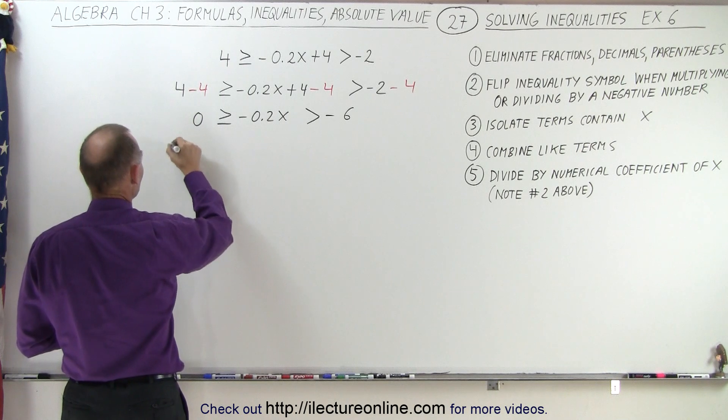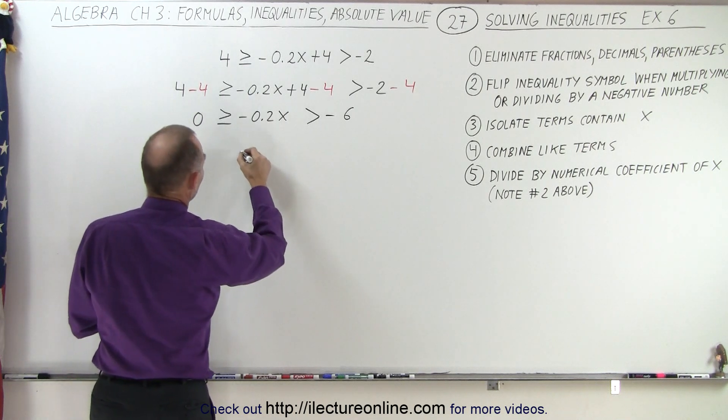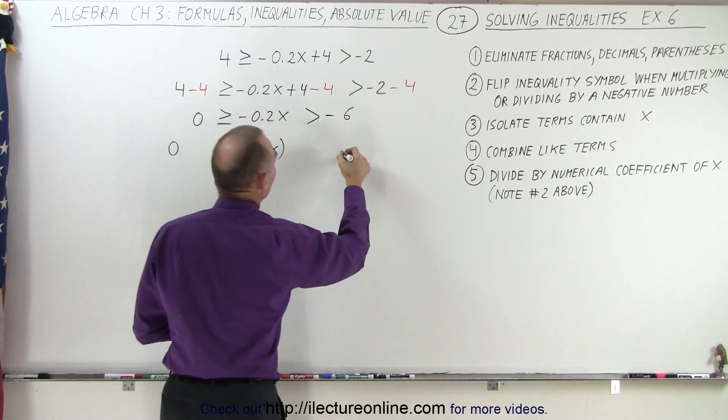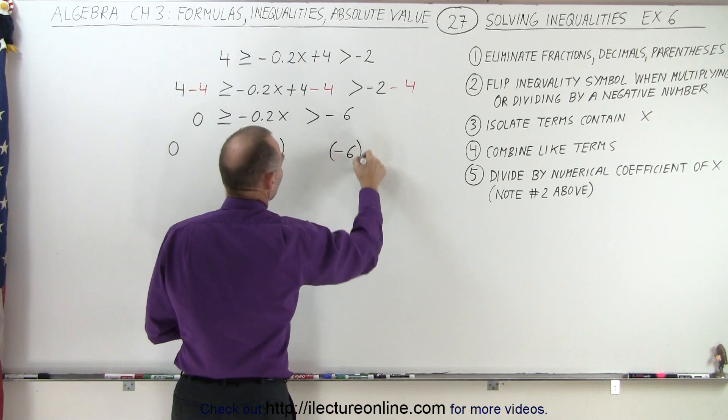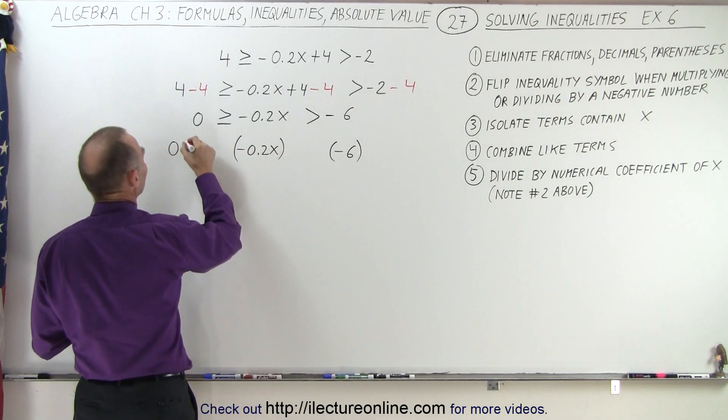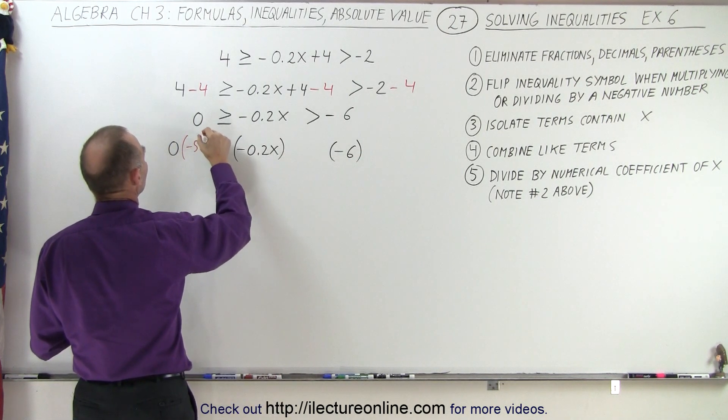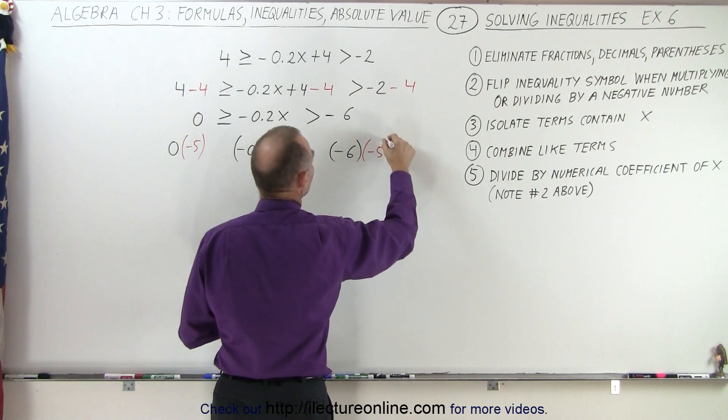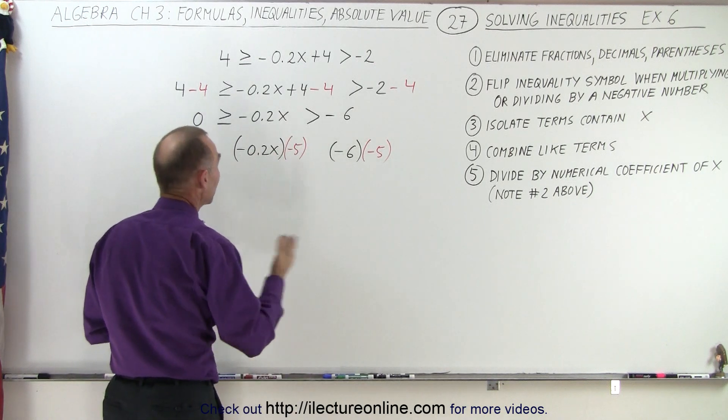So on the left side, we have 0. Here we have negative 0.2x in parentheses. Here we have negative 6. And we're going to multiply everything by negative 5. We're going to multiply this by negative 5, this by negative 5, and this by negative 5. And of course, when we do that, the inequality symbols turn around.